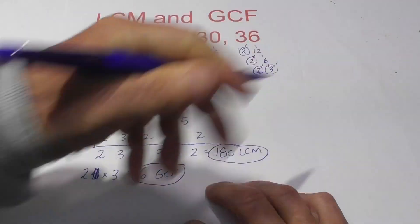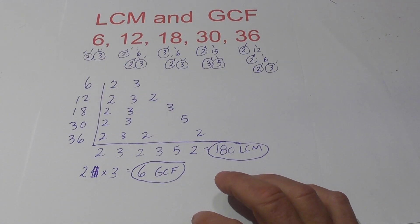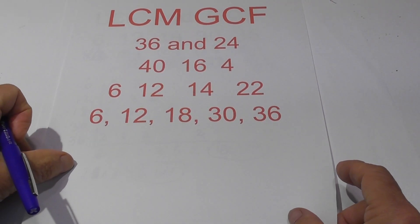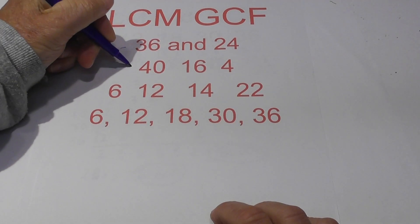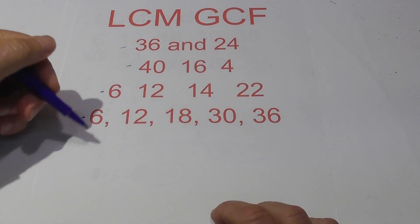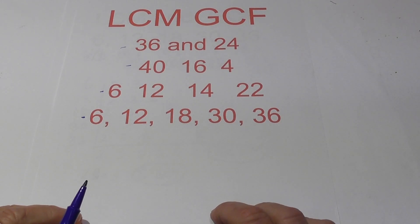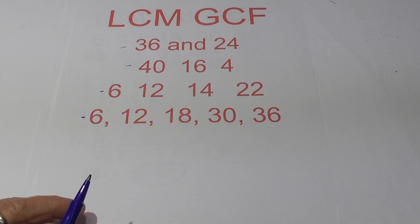I hope that helps in finding the LCM and GCF. Just as a summary, I did it for 2 numbers, 3 numbers, 4, and 5 — and this would even work for 6 or more. Thanks for watching. MooMooMath uploads a new math and science video every day. Please subscribe and share.